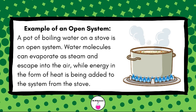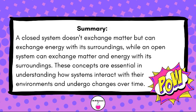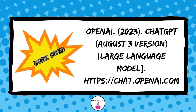In summary, a closed system doesn't exchange matter but can exchange energy with its surroundings, while an open system can exchange both matter and energy with its surroundings. These concepts are essential in understanding how systems interact with their environments and undergo changes over time.